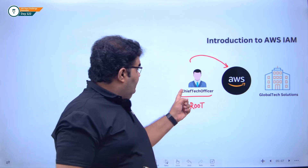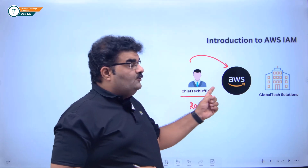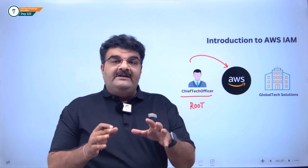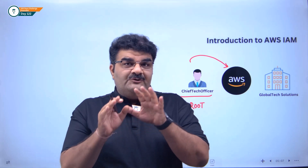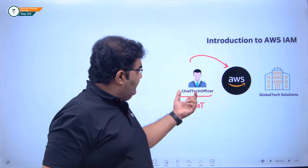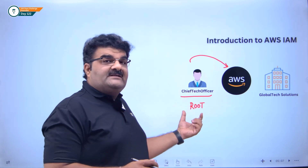The Chief Tech Officer is the root of the AWS account. And root actually has full control over your AWS account — he can manage any services, billing, support plans, everything. Yes, we need to protect this user account, and we will talk about that as well. But I just want you to understand that Mr. Chief Tech Officer is currently the root of our AWS account.